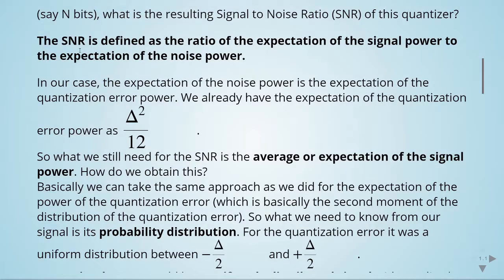The signal-to-noise ratio can be defined as the ratio of the expectation of the signal power to the expectation of the noise power. In our case, the expectation of the noise power is the expectation of the quantization error power. Last time we calculated this and found it equals the step size squared divided by 12. So what we need to do now is calculate the expectation of the signal power.